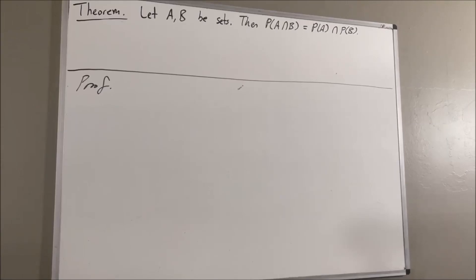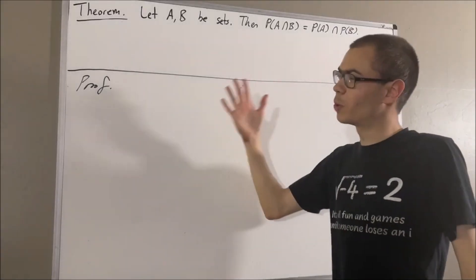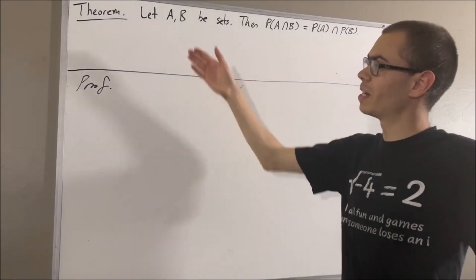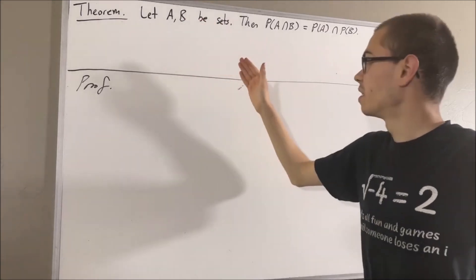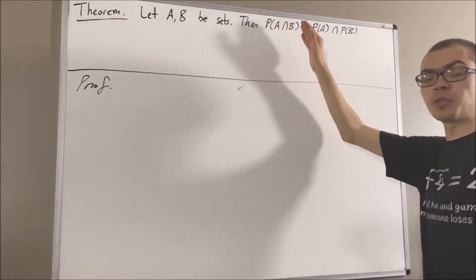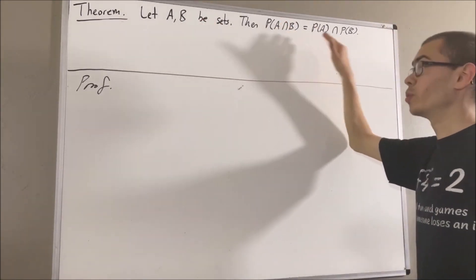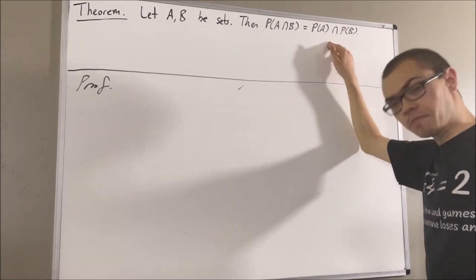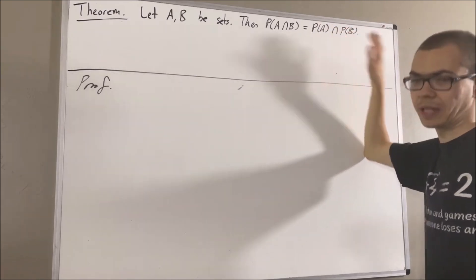Hello! In this video, we are going to prove the following theorem. Let A and B be sets. Then, the power set of the intersection of A and B is equal to the intersection of the power set of A and the power set of B.